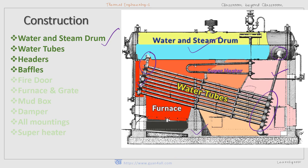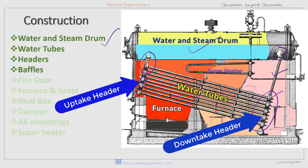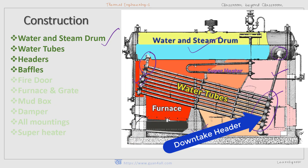Both the uptake header and downtake headers are connected by water tubes. These are tubes inclined at an angle of about 15 degrees to the horizontal, through which water passes and changes into steam. These tubes connect the uptake header to the downtake header.